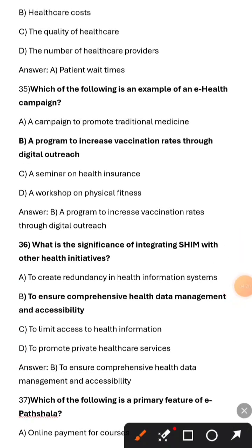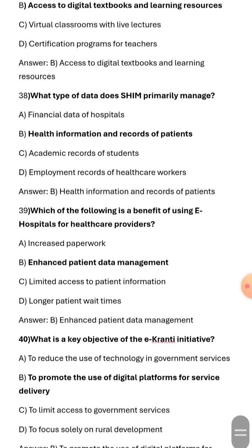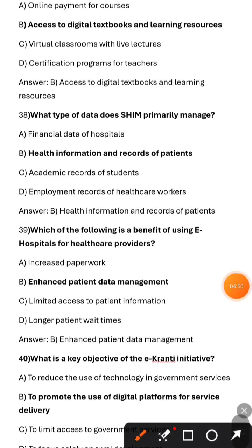e-Hospitals aim to reduce which of the following? Patient wait times. Which of the following is an example of an e-health campaign? A program to increase vaccination rates through digital outreach. What is the significance of integrating SHIM with other health initiatives? To ensure comprehensive health data management and accessibility. Which of the following is a primary feature of e-Pathshala? Access to digital textbooks and learning resources. What type of data does SHIM primarily manage? Health information and records of patients. What is the benefit of using e-Hospitals for healthcare providers? Enhanced patient data management.